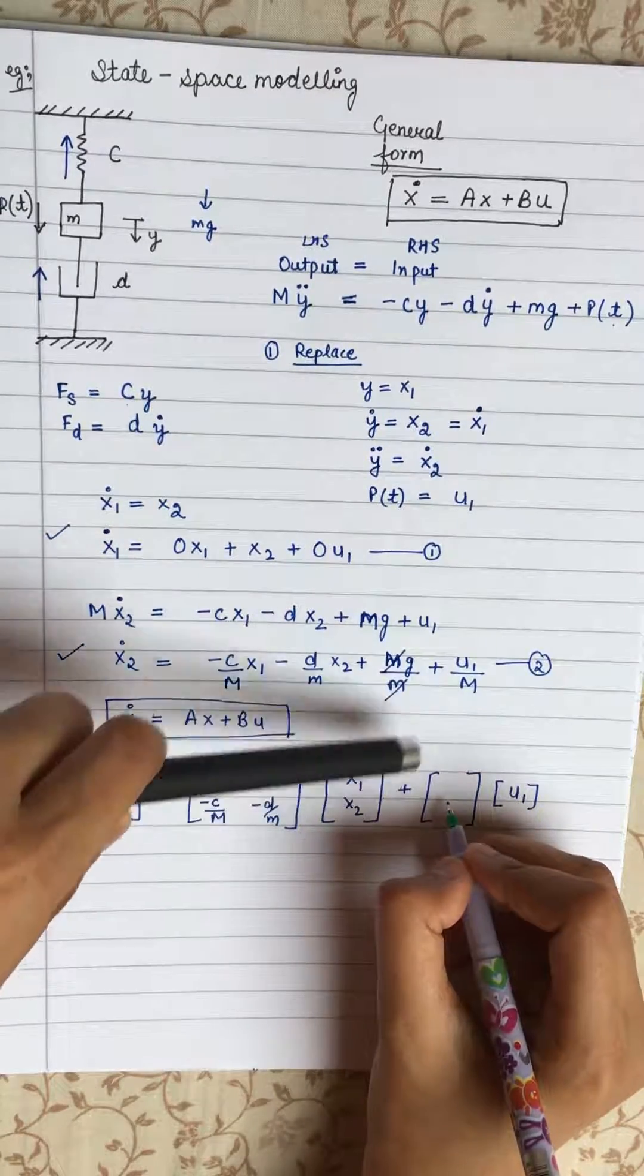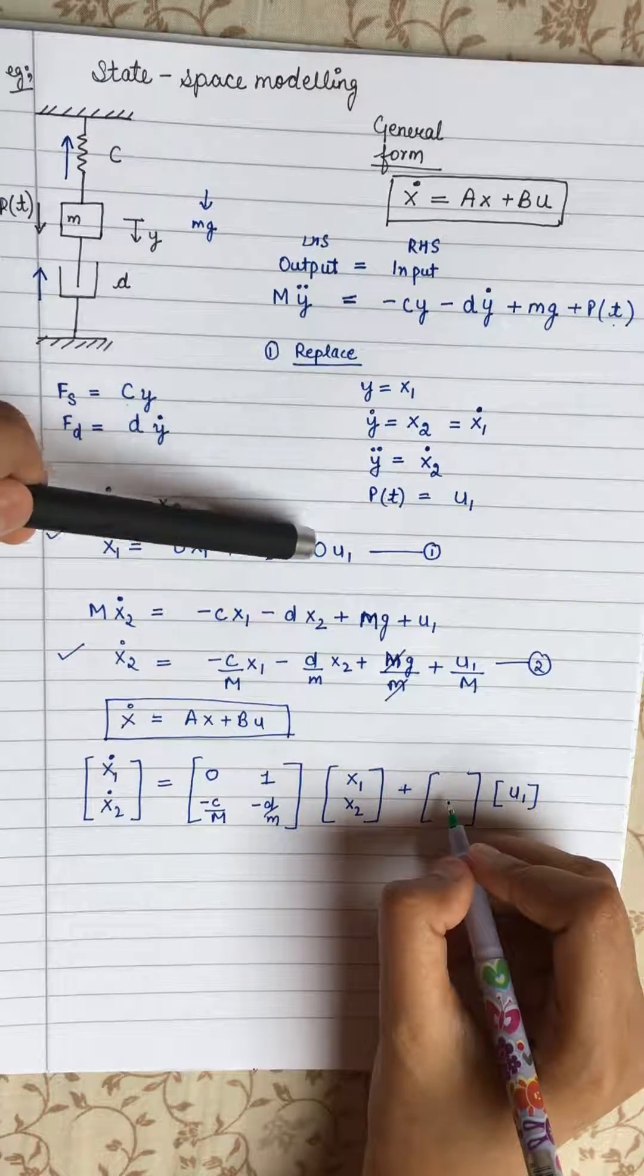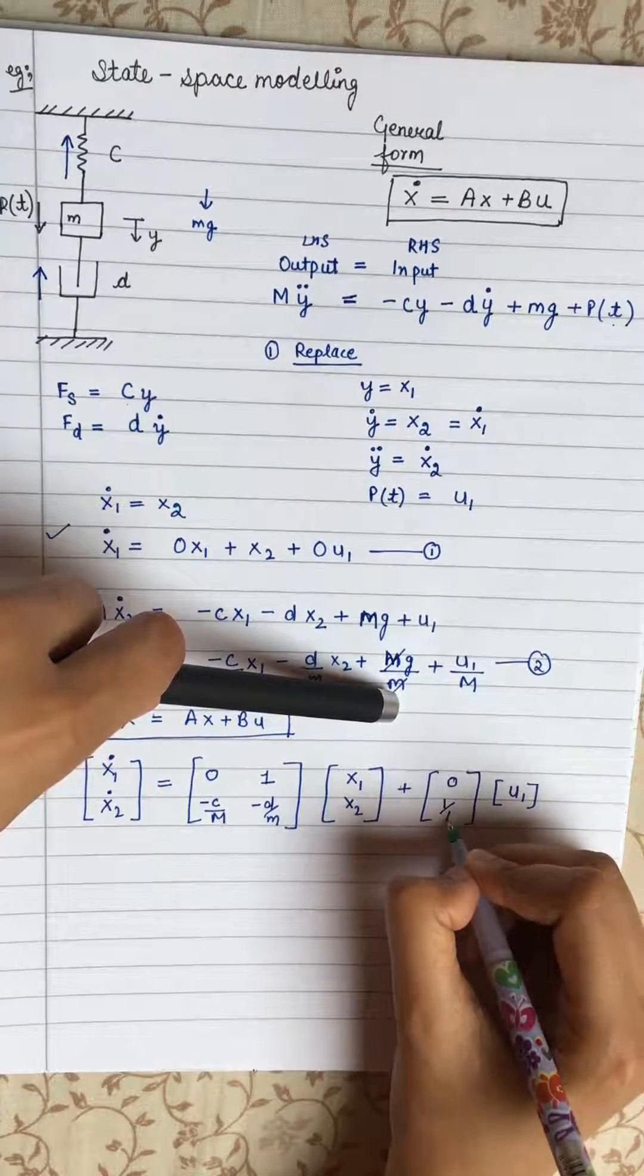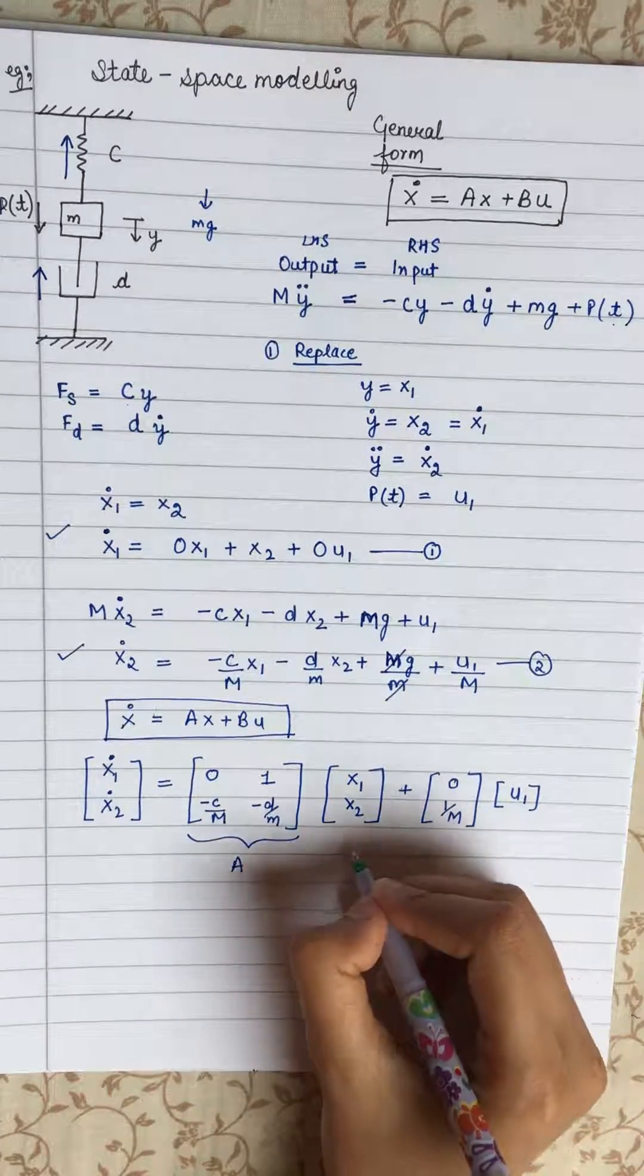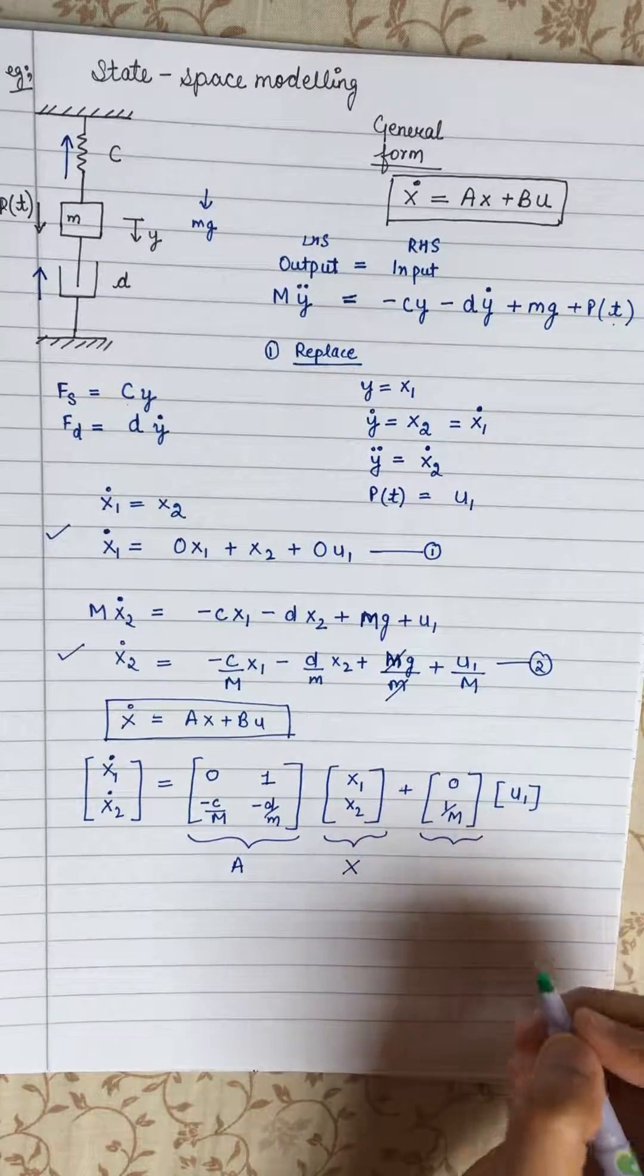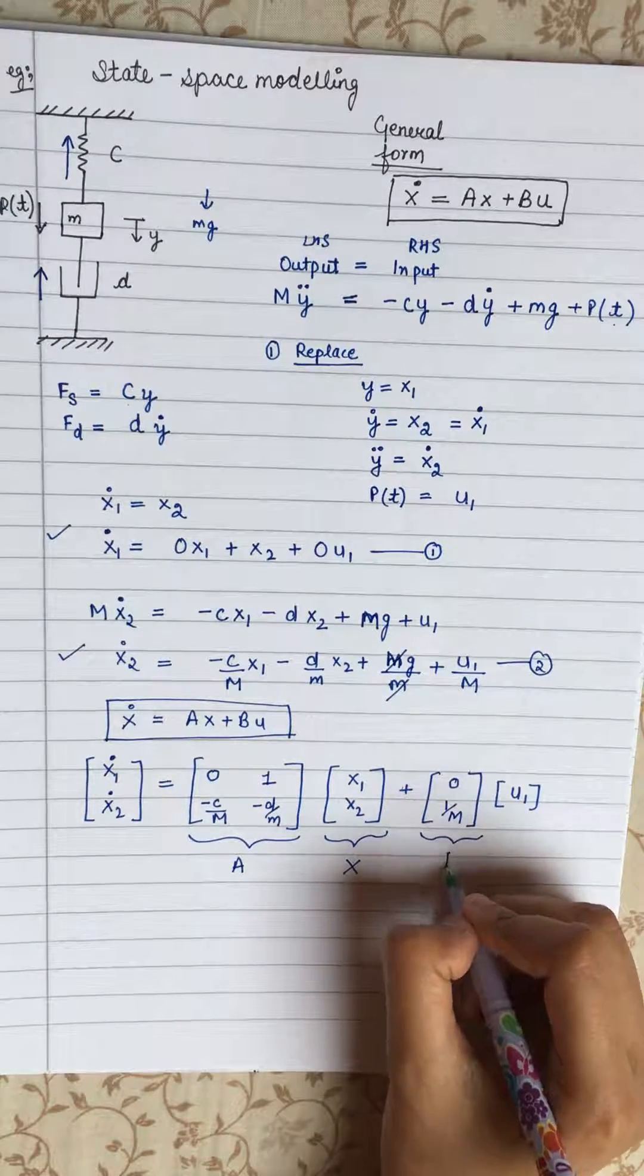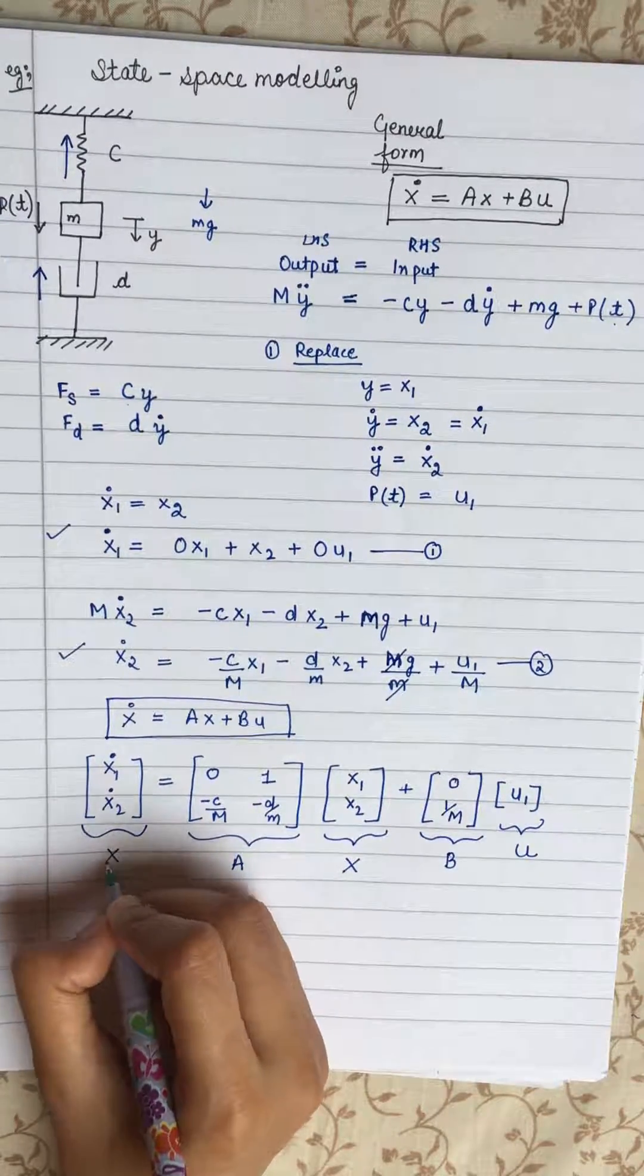Now this side, this is our input. So in this equation, our input for the U1 is 0. Here our input is 1 by M. So this is our A. This is our X. This one is our B. This is our U. This is our X dot.